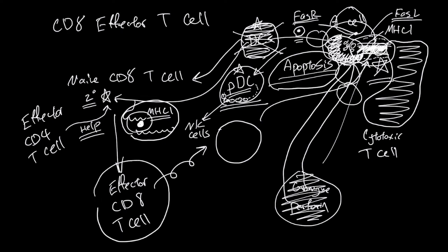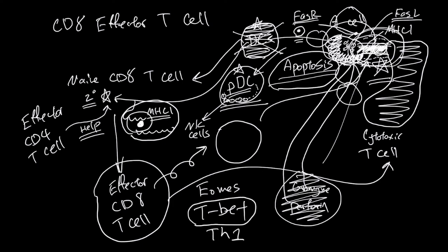Differentiation from effector CD8 T cell to cytotoxic CD8 T cell triggered by this binding uses transcription factors EOMES and TBET. TBET is also a transcription factor used by T helper cell 1, and T helper cell 1 activates macrophages to destroy things that the macrophage took in.